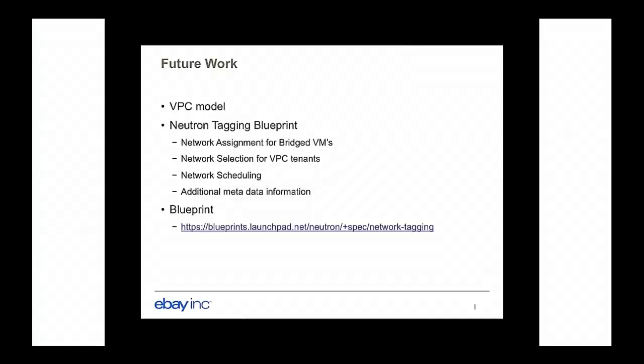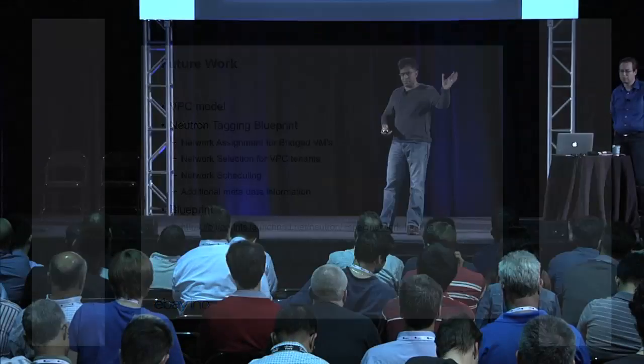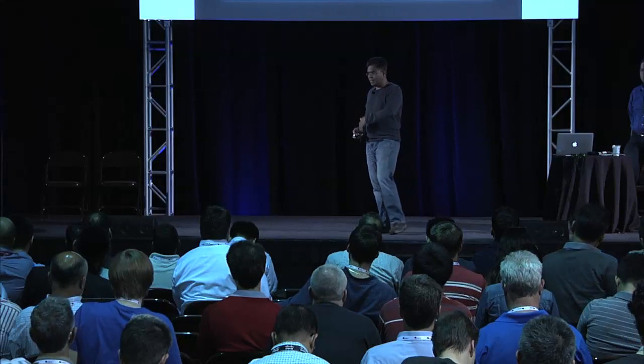We are also working on some future items. One of them is the VPC model. We have different properties within eBay — Marketplaces, PayPal, StubHub — and within those there are different tenants. We would like to take a logical grouping of tenants and create a VPC so they can share resources — whether Glance images, Cinder volumes, or networks. We started by submitting a blueprint to Neutron called the network tagging blueprint. It addresses several use cases; if anyone is interested in working with us on it, that's fine too.